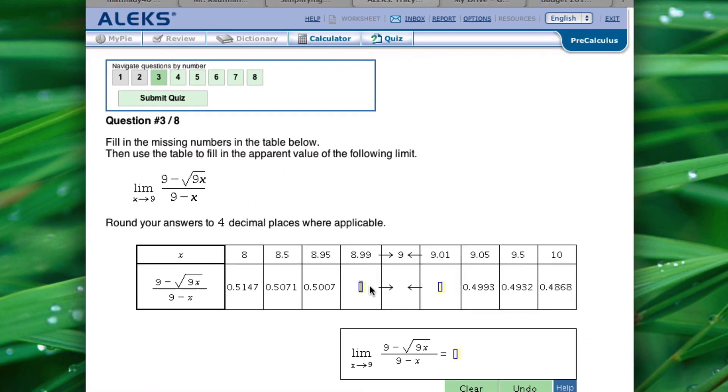So in this case, we're finding the limit as x approaches 9 for this function here. Again, you can see if we plug in a 9 in the denominator, it gives us 0 or undefined solution. So we're going to look at these values starting at 8 and going towards 9 and then starting at 10 and going towards 9. So let's start with this 8.99.